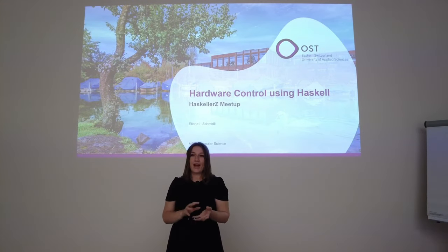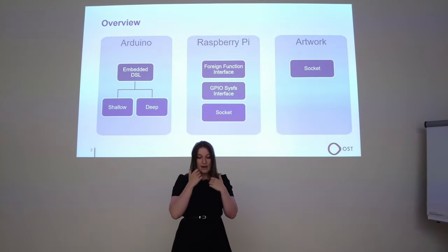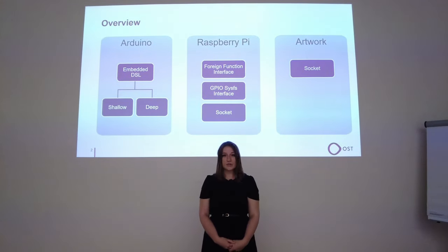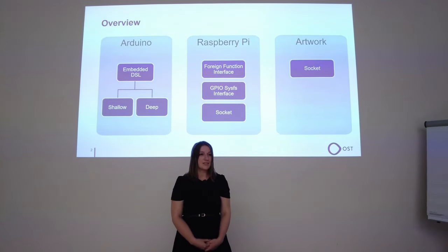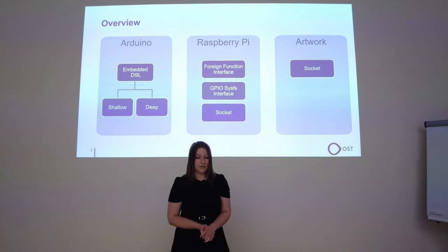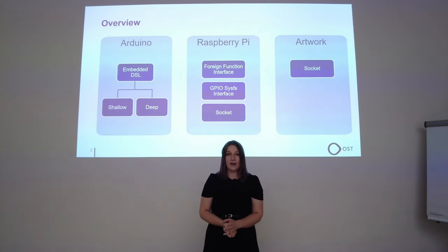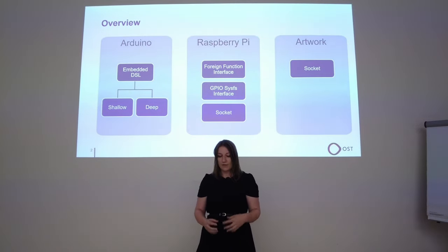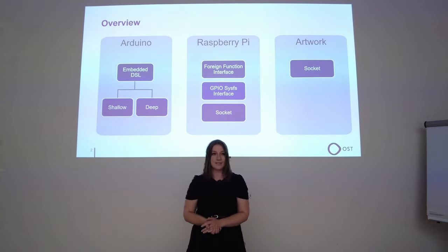It would be nice to use Haskell for this purpose — as you know, Haskell makes it possible to write elegant code and helps reduce runtime errors. This semester I looked at different approaches to control such devices using Haskell. I had a look at the Arduino, which uses embedded DSLs to control input and output pins, and also at the Raspberry Pi, where I found three approaches to control the GPIO pins. At the end I will show you an artwork I showed last time, where I've now implemented a connection to the hardware of the robotic artwork.